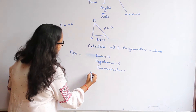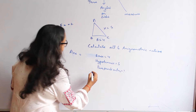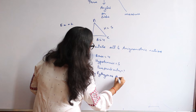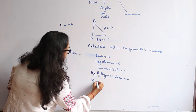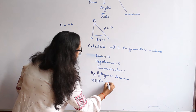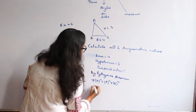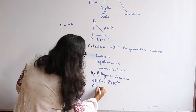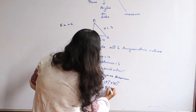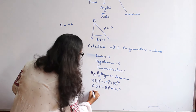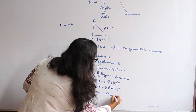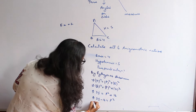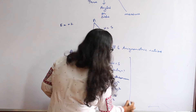By the Pythagorean theorem, hypotenuse squared is equal to perpendicular squared plus base squared. Putting in the values: 5 squared equals perpendicular squared plus 4 squared. That gives us 25 equals perpendicular squared plus 16, so perpendicular squared equals 25 minus 16, which comes out to be 9.